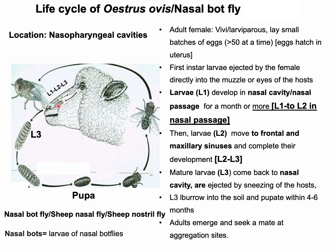The first-instar larvae crawl to the nasal passages and remain there for a month or more, feeding on the nasal mucosa. In the nasal passages, larval instar one moults to larval instar two. Larval instar two then crawls into the frontal and maxillary sinuses and develops rapidly into larval instar three. The mature larvae (L3) return to the nasal cavity and are ejected by sneezing of the host onto the ground. Larval instar three then burrows into the soil and pupates, with adults emerging after four to six months.